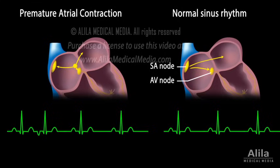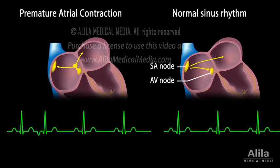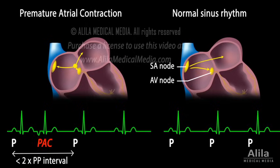An ectopic atrial activation can usually enter the SA node, depolarize it, and reset its timing, causing a so-called non-compensatory pause. On an ECG, this is seen as changes in the PP intervals that contain the ectopic beats.